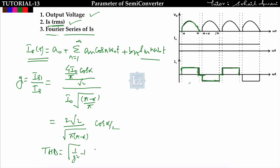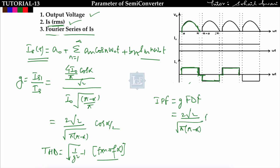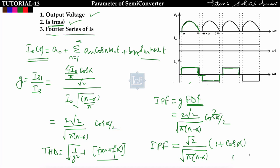THD = √(1/G² − 1), so THD is a function of alpha — for different alpha values, THD will be different. The input power factor = G × FDF = G × cos(α/2). Since G involves cos(α/2) and FDF = cos(α/2), the product gives cos²(α/2). Using the identity 2cos²(α/2) = 1 + cos α, the input power factor simplifies to √[2/π × (1 + cos α)/(π − α)], or equivalently √[2/(π(π − α))] × (1 + cos α).